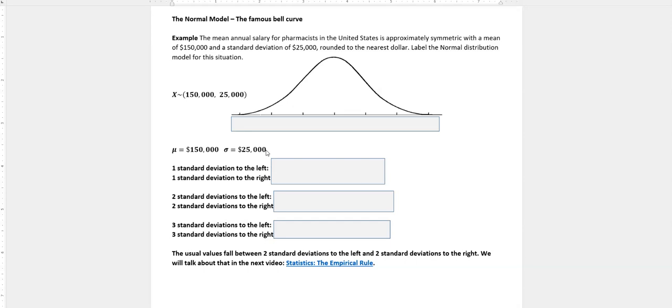So what we want to know is - we know the mean, which is right in the middle, and then what's one standard deviation to the left and one standard deviation to the right. And so in order to find that, you just take your mean and you subtract one standard deviation to get to the left. That'd be $125,000, and then you add $25,000 to get to the right.